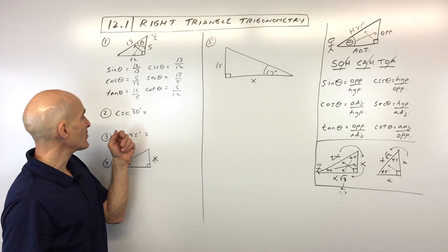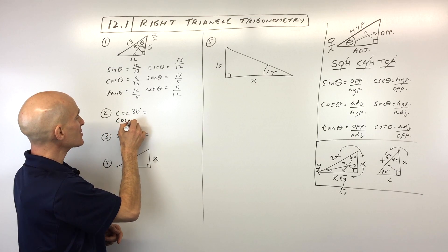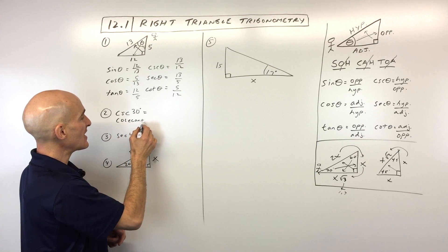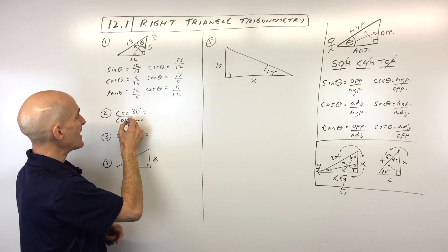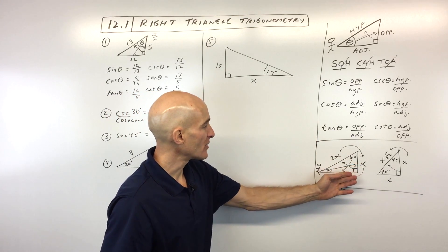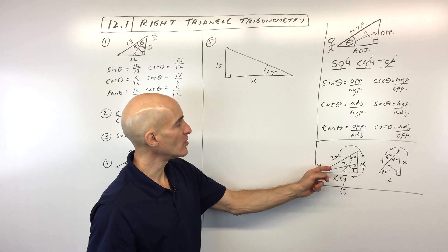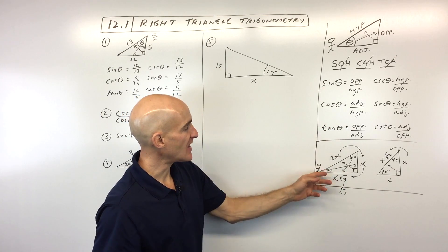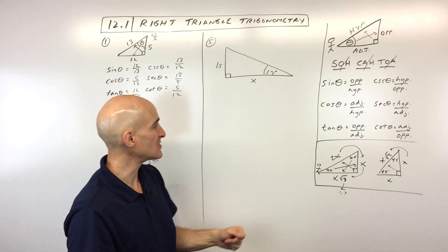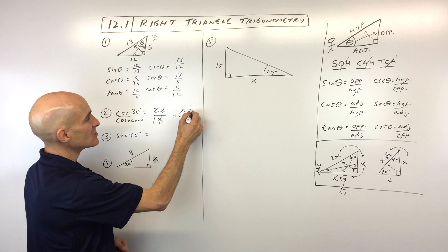For number 2, cosecant of 30 degrees — abbreviated CSC. Cosecant is the reciprocal of sine, so it's the hypotenuse over the opposite. Using the 30-60-90 special right triangle, that's 2X over X. The X's cancel, and we just get 2. So cosecant of 30 degrees equals 2.